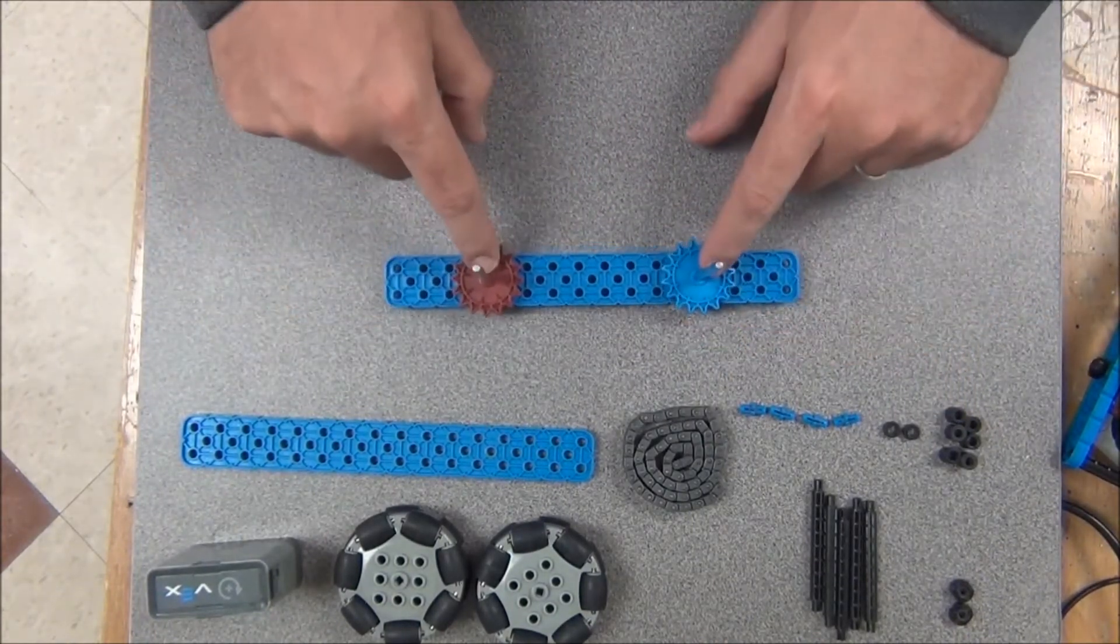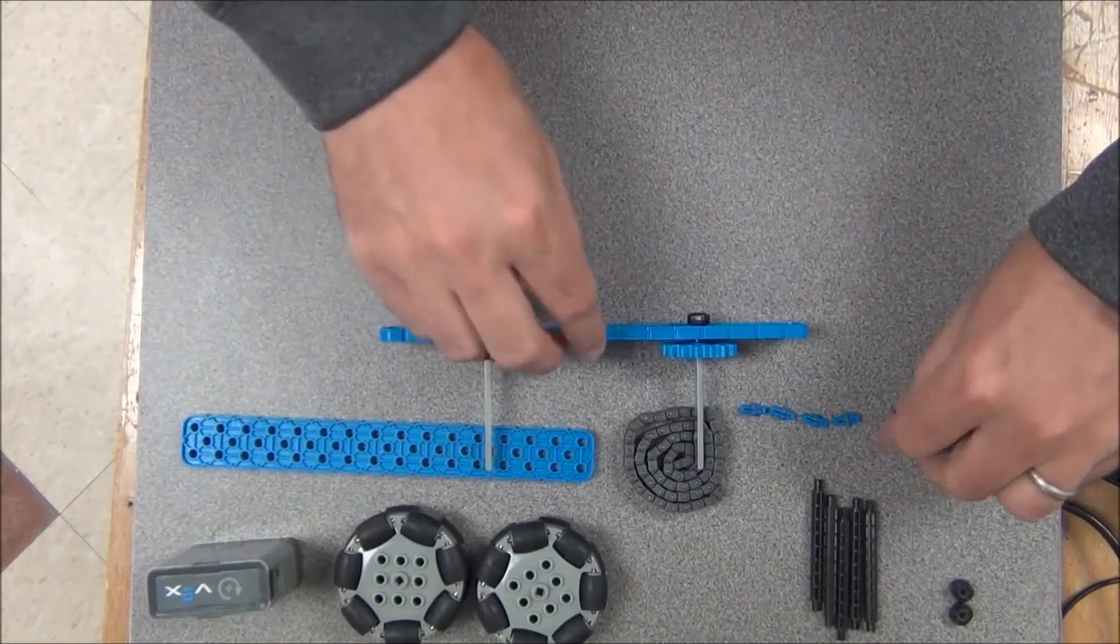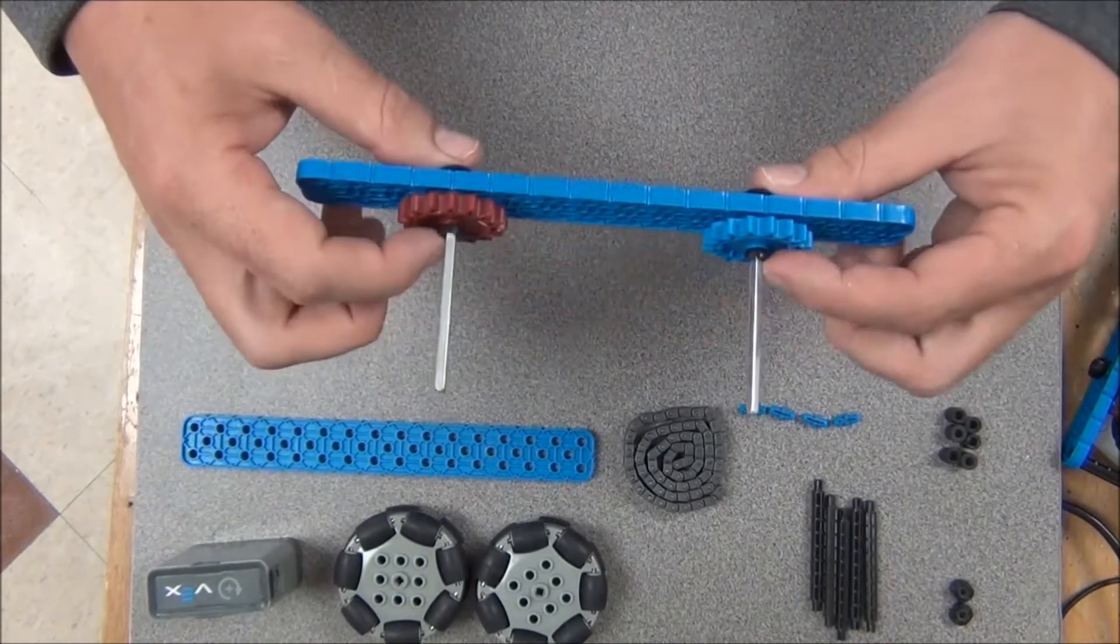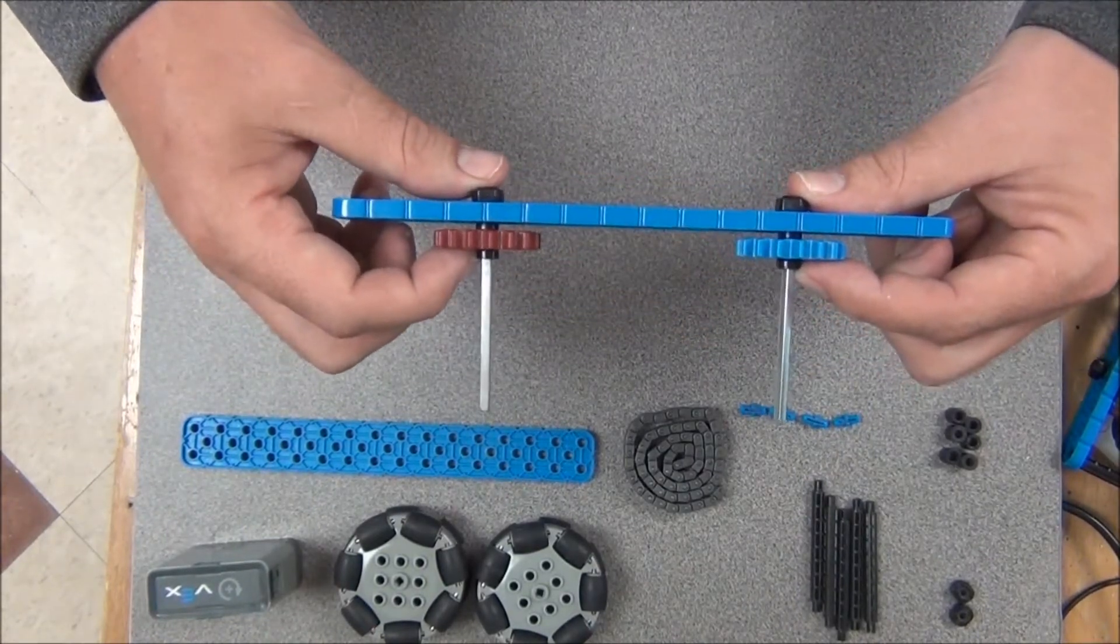I've added my two medium sprockets and I'm going to take and add two more small spacers, one to each of these axles. So once again we've got space on either side of our sprockets.